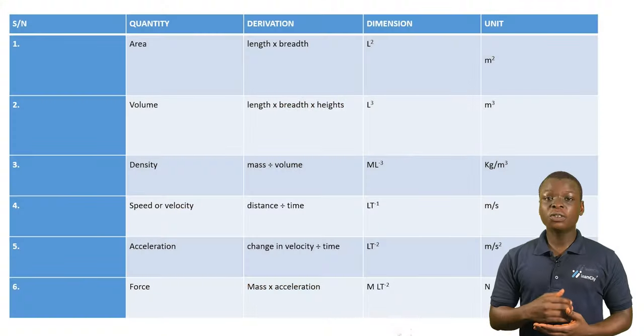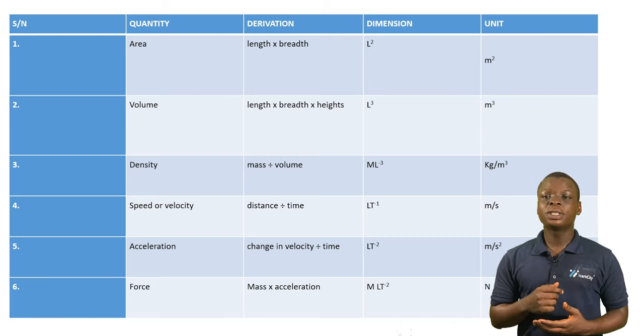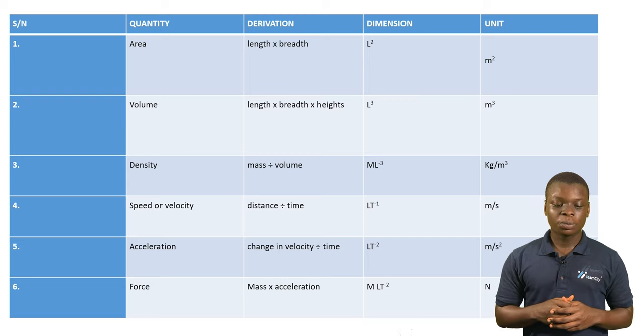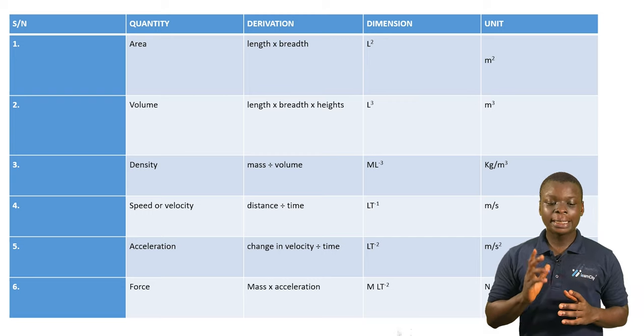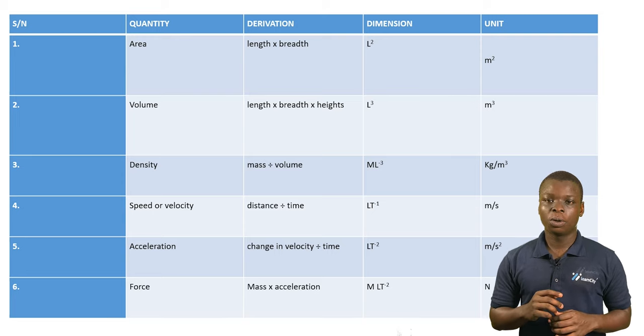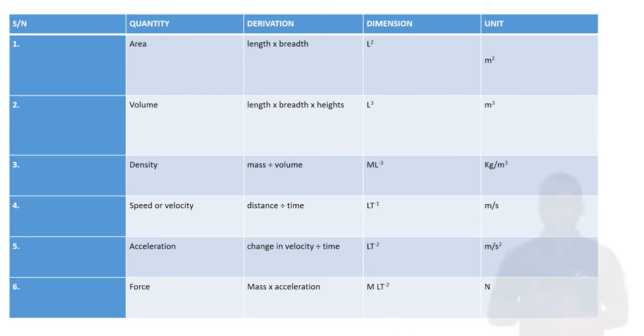Here is the table talking about fundamental and derived quantities — the derivations, the dimensions, and the units in which they are measured. First up, we have area. The derivation of area is length times breadth, and the dimension is L squared. Area is measured in m squared. For volume, the derivation is length times breadth times height, the dimension is L cubed, and the unit is m cubed.